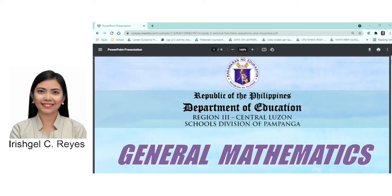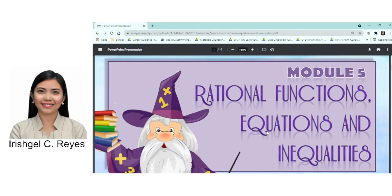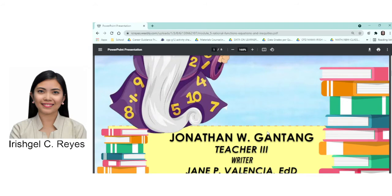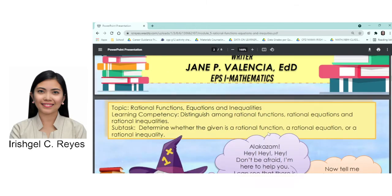Hi, good day everyone. Let me discuss Module 5 of General Mathematics, entitled Rational Equations, Rational Functions, and Rational Inequalities. On this module, you will be able to identify which of the given examples are functions, equations, and inequalities. Let me present the competencies that you need to obtain to finish this session.